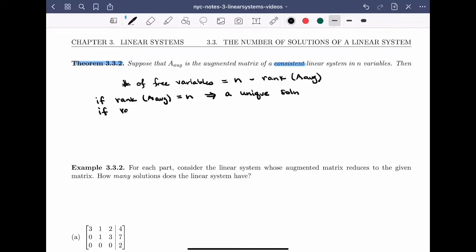If the rank of the augmented matrix is strictly less than n, this means we have infinitely many solutions. And for each free variable, we're going to need to assign a parameter if we're actually writing down the solution.